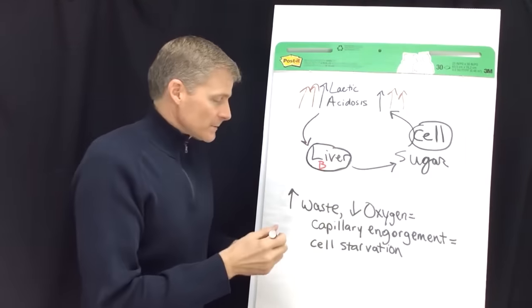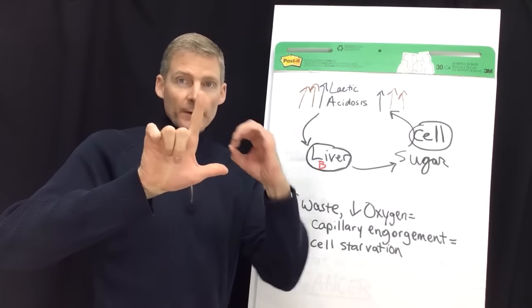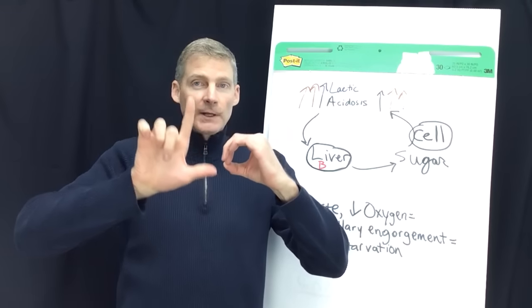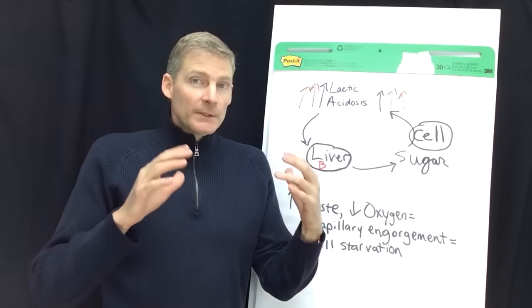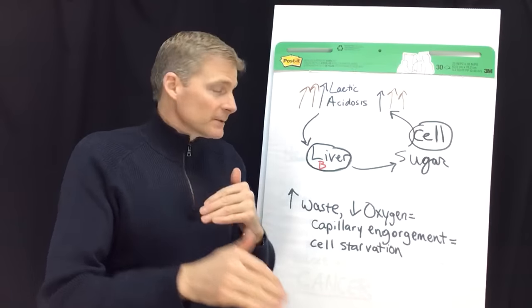So here's L for lactic acid, here's O for oxygen. The lactic acid waste products go up, oxygen goes down, and now the arteries dilate because there's not enough oxygen going to the cells.